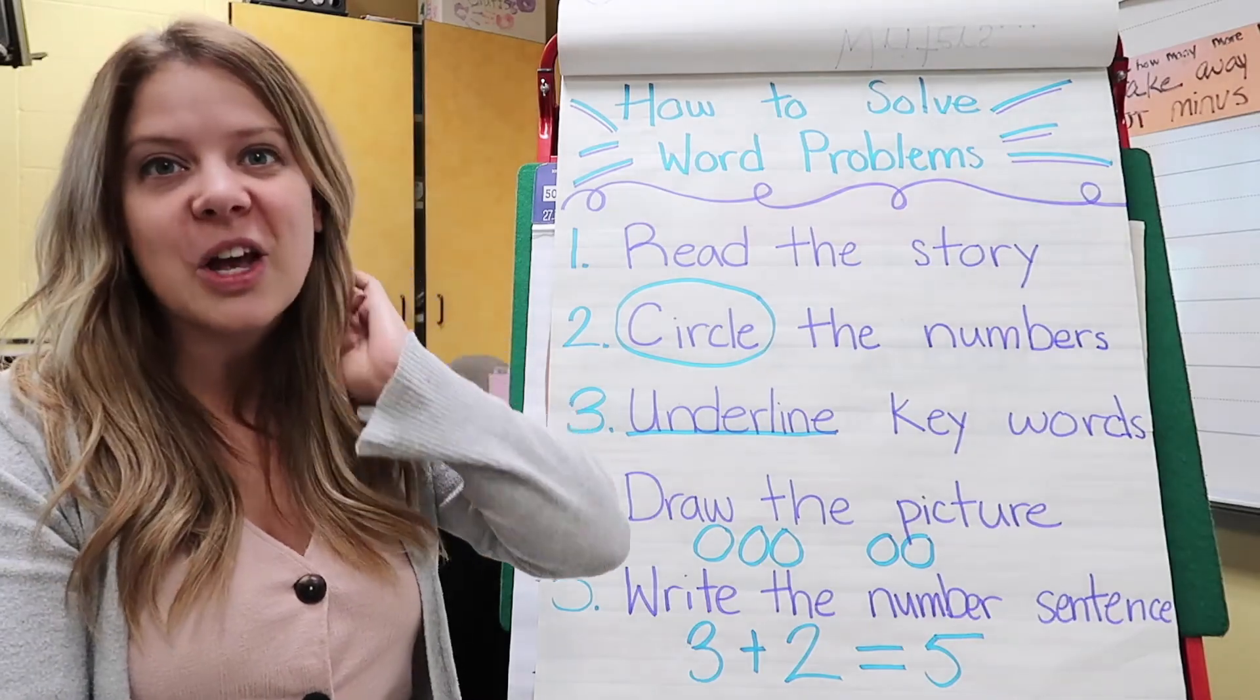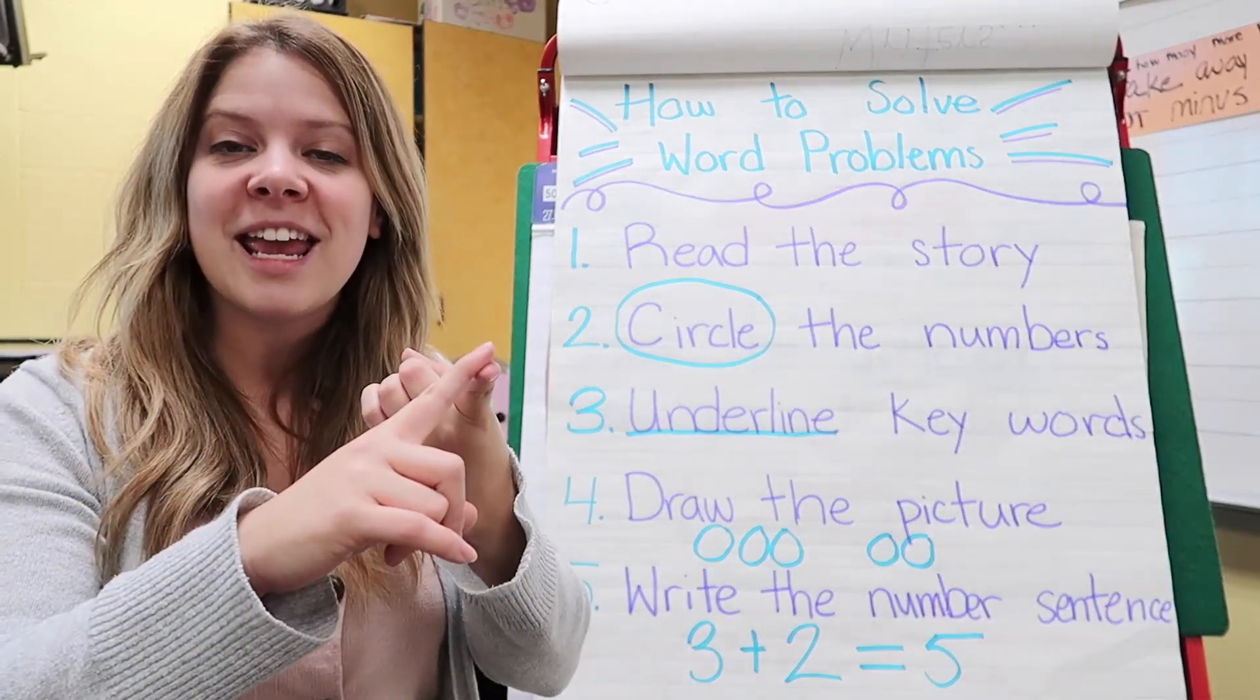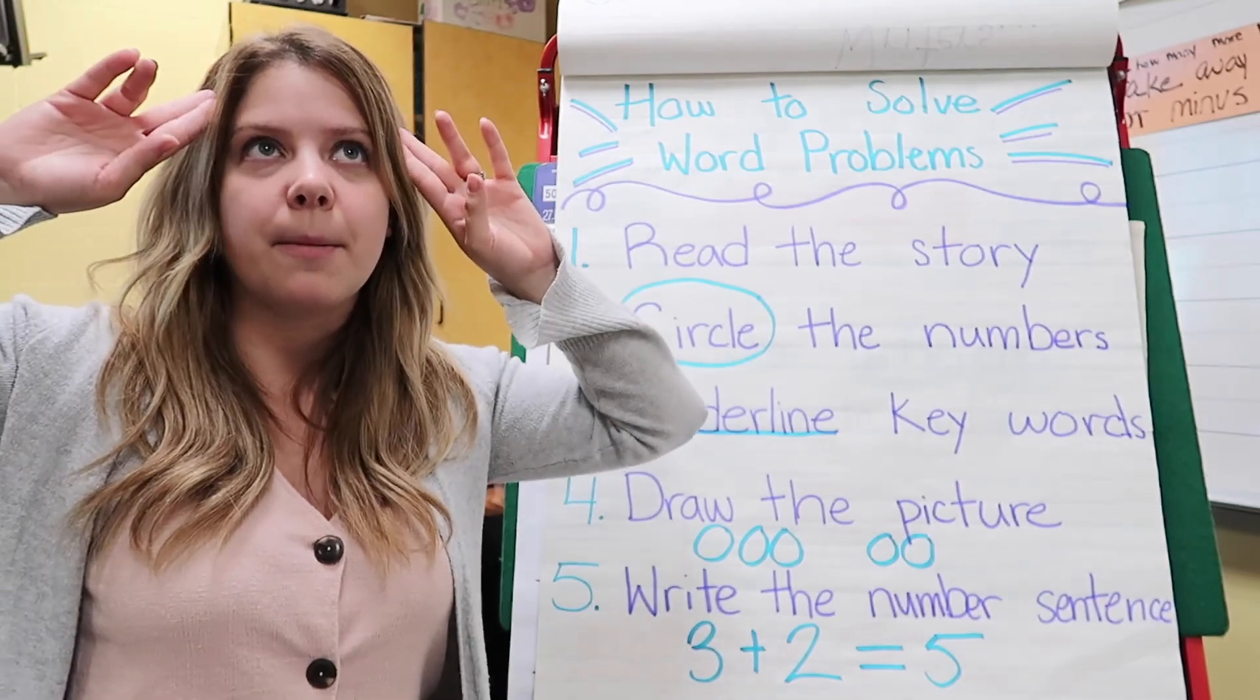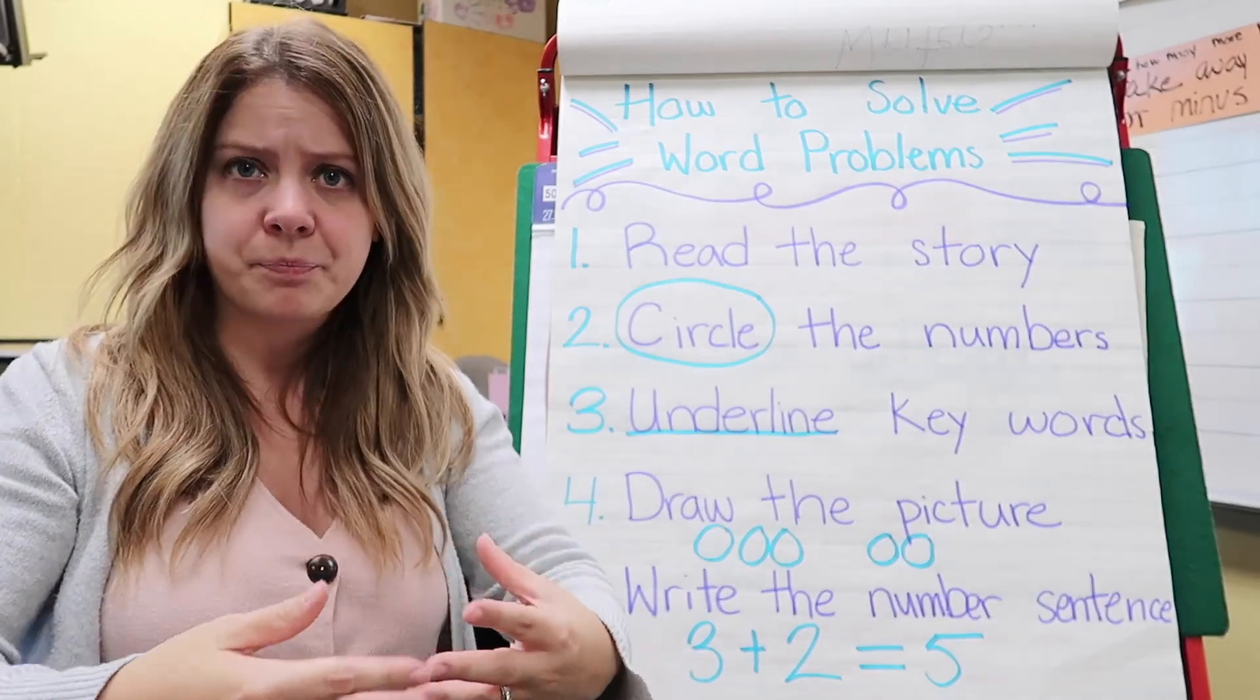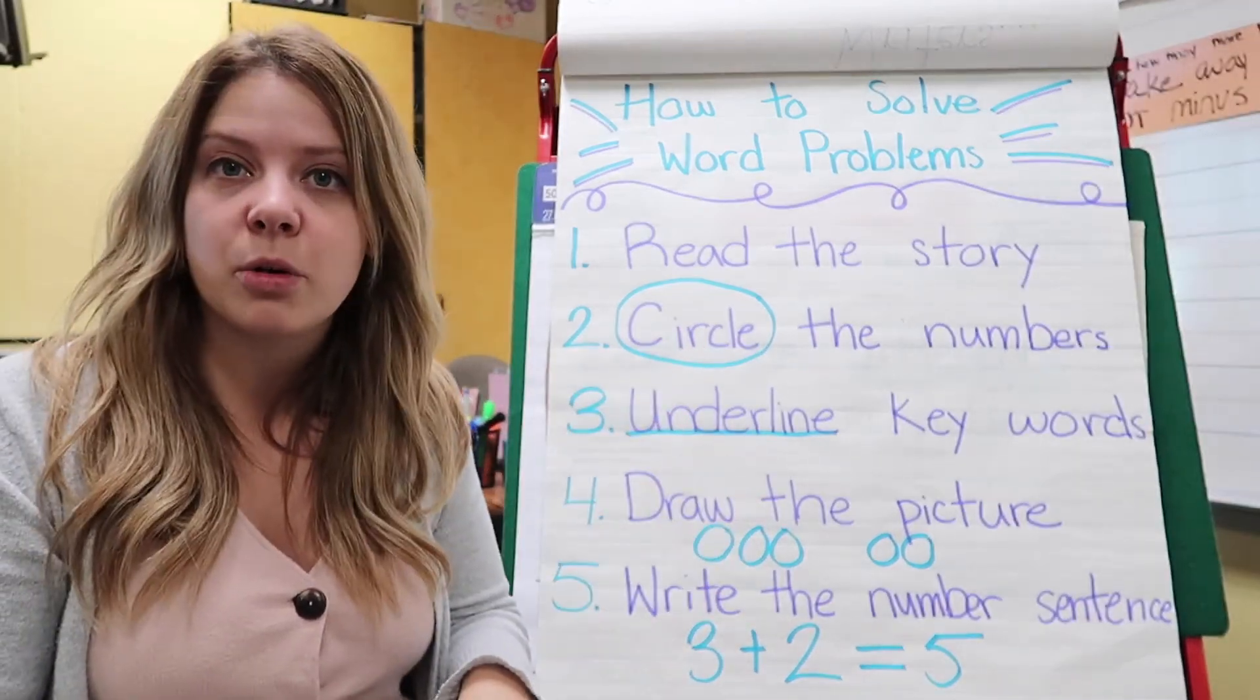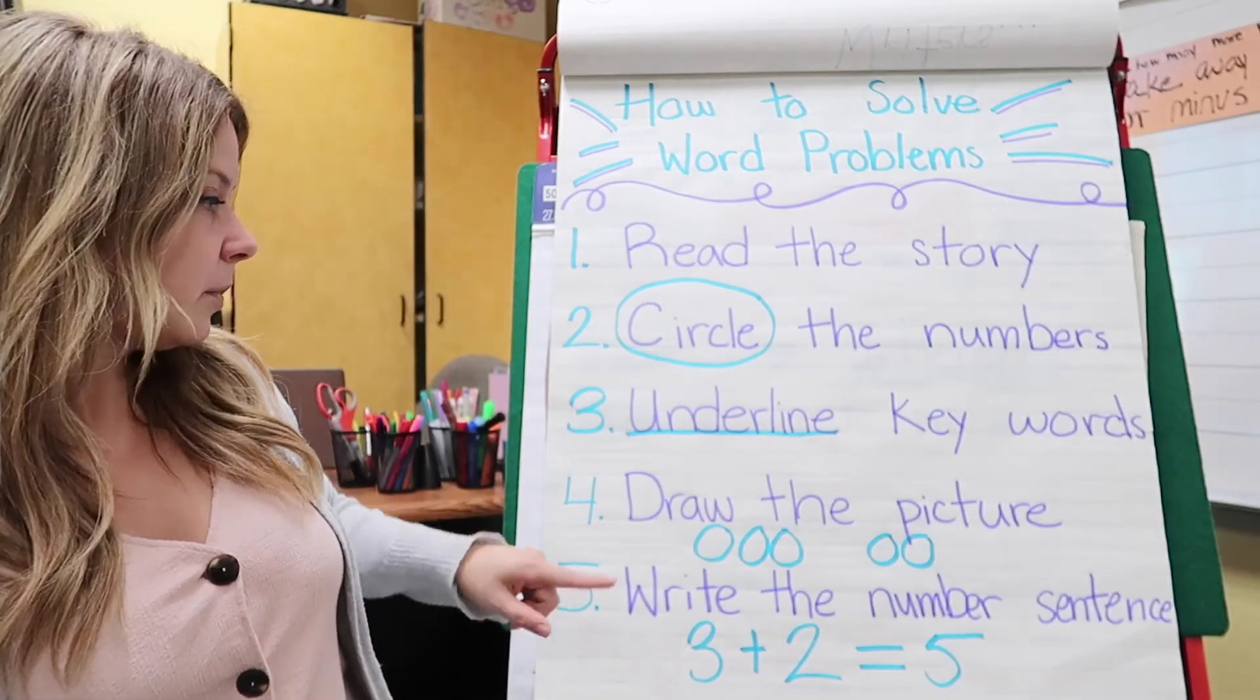Underline the key words. We've had lessons about the key words. Words like in all, all together. Those are key words that make our brain think, in all means to add, because it's saying put two numbers together. So, you want to circle the numbers and underline the key words so that you really understand the story problem.